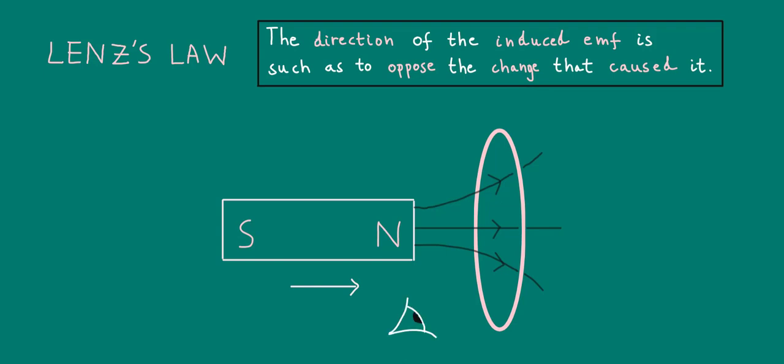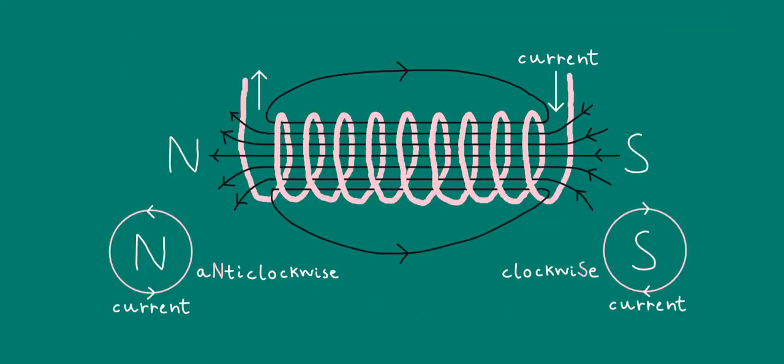If we were to look at the coil from the left, we would see an anticlockwise induced current flowing. Why should this be? Recall that when current flows in a coil of wire, the coil behaves much like a bar magnet, with its two ends functioning like magnetic poles.